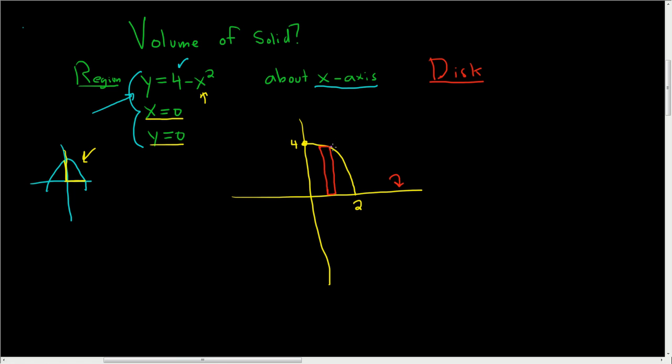In this case, big R is the outer radius. In other words, it's the full distance from the far end of the rectangle all the way to the axis. So this is our big R of x.